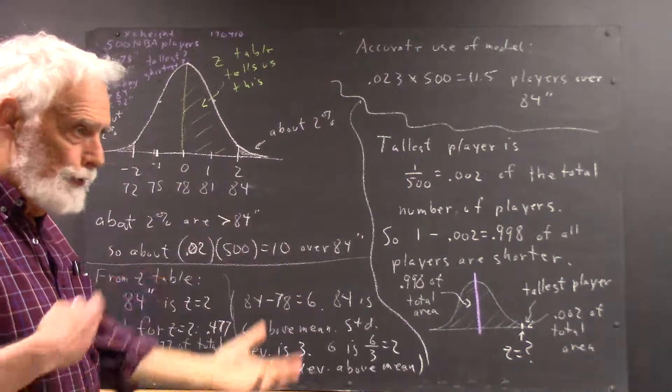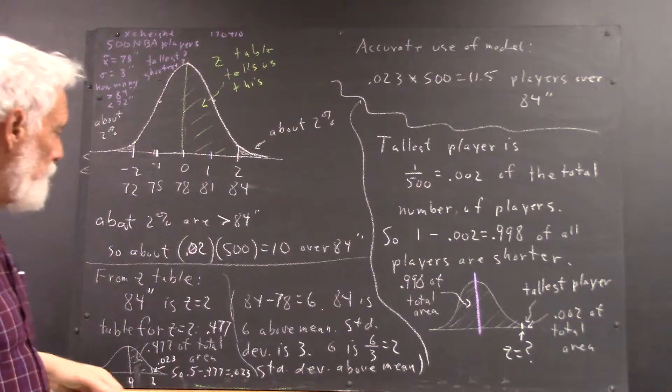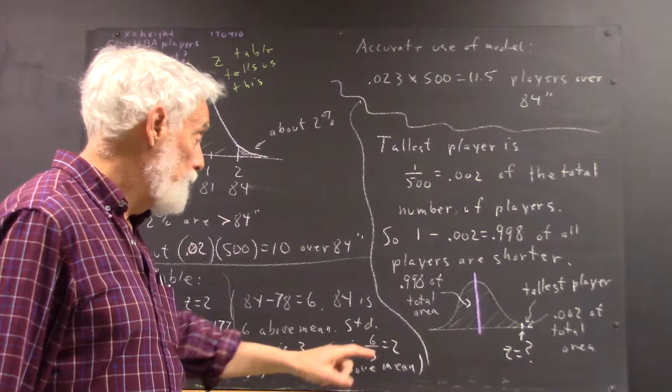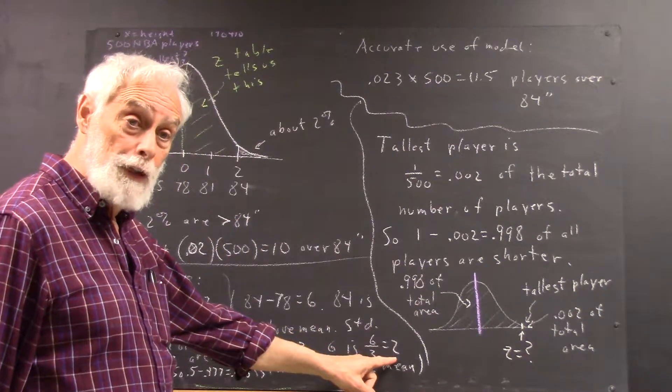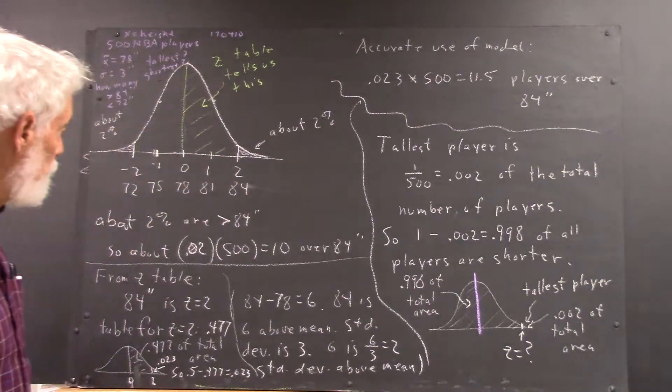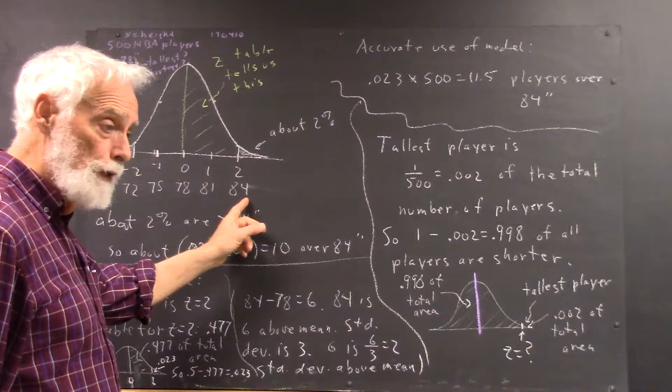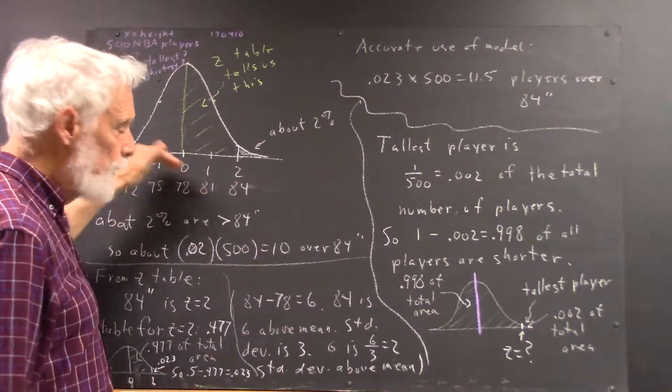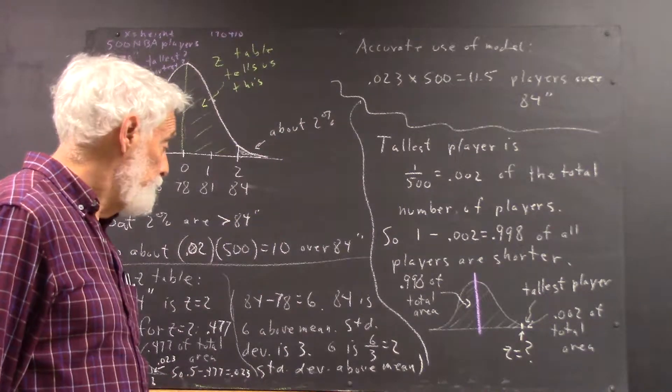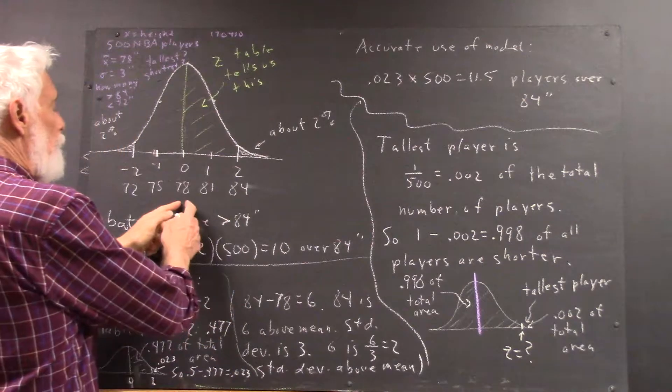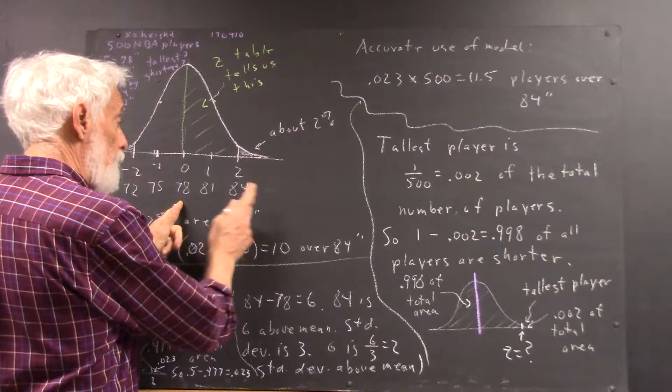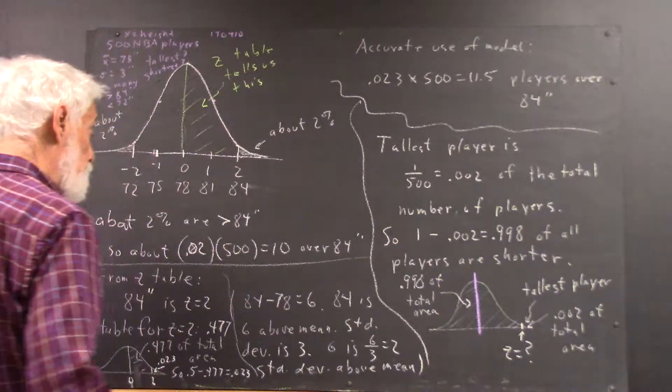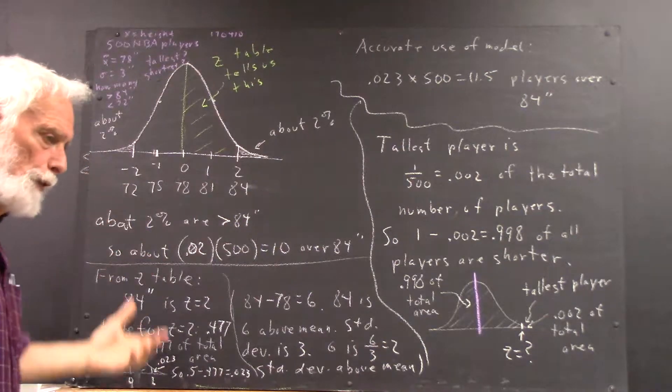If you don't have nice whole numbers that you can think about clearly, you see that if you divide 6 by 3, if you divide how far you are from the middle by the standard deviation, you get the number of standard deviations. 6 divided by 3 is 2. While it's probably very clear to us that if we go 6 units here, since the standard deviation is 3 units, that's 2 standard deviations. Of course, we already knew that when we labeled our curve. But this is how you would ordinarily calculate it.